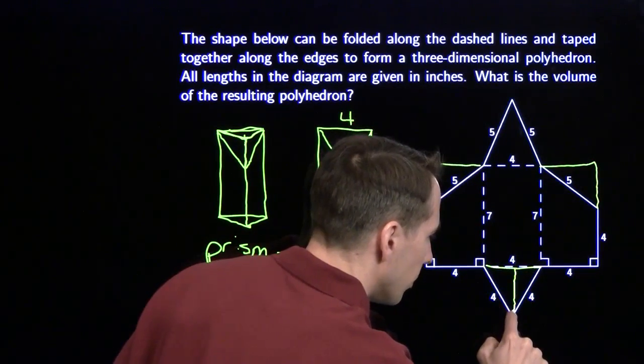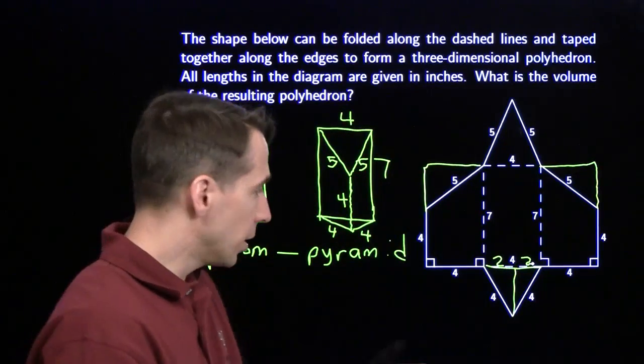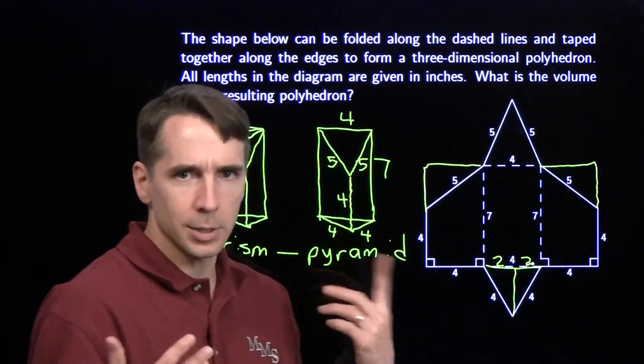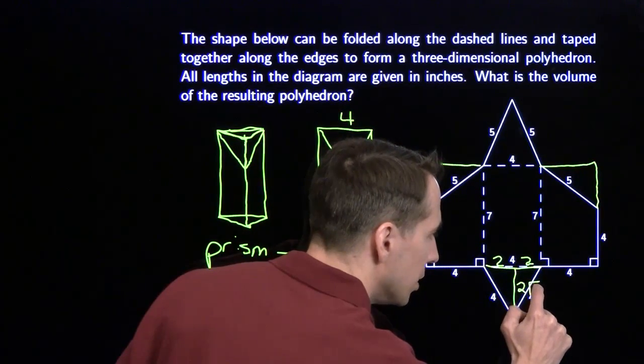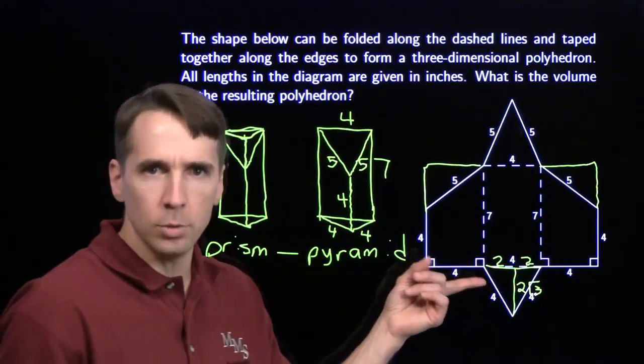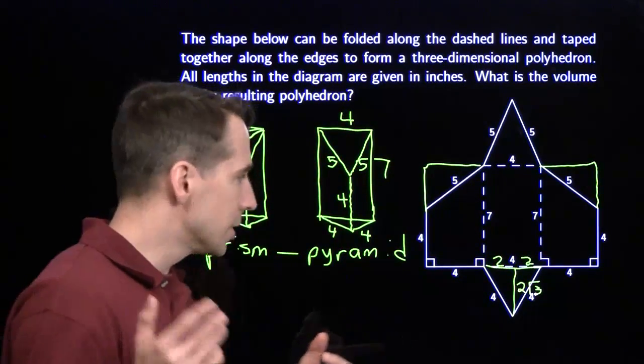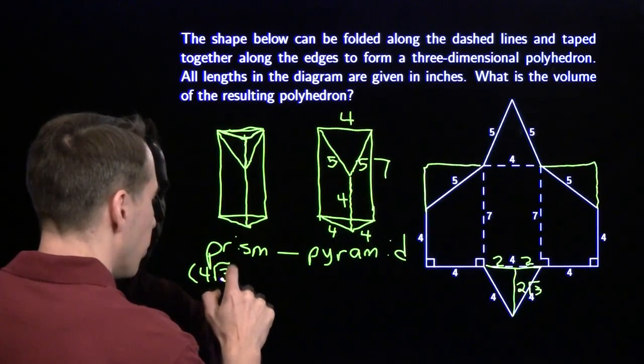We need to start off by getting the area of the base. This triangle down here. This equilateral triangle. All right. You got this is 4. We're going to try to find the height. Just split that in half. These are each 2. Use the Pythagorean theorem. 4 squared is 16. Minus 2 squared is 4. Gives us 12. Take the square root of 12. You get 2 times the square root of 3 is the height. So the area of this equilateral triangle is 4 times 2 root 3. Divide by 2 because it's a triangle. The area of the base is 4 times the square root of 3.